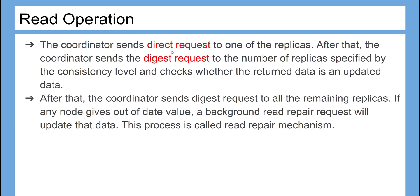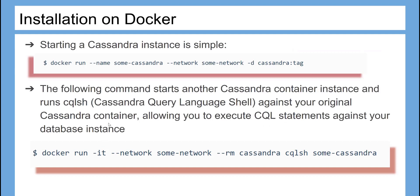For read operations, the coordinator sends a direct request to one of the replicas. After that, the coordinator sends a digest request to the number of replicas specified by the consistency level and checks whether the returned data is up-to-date. Then the coordinator sends a digest request to all the remaining replicas. If any node gives an out-of-date value, a background read repair request will update that data — this process is called the read repair mechanism.